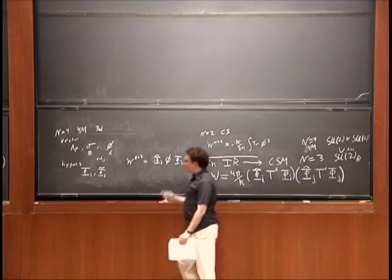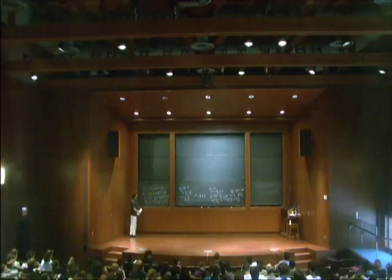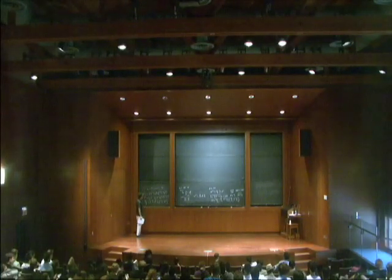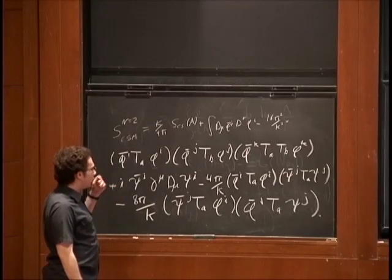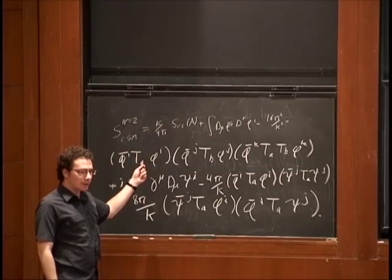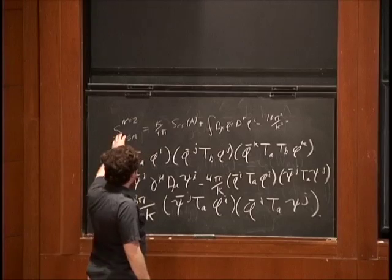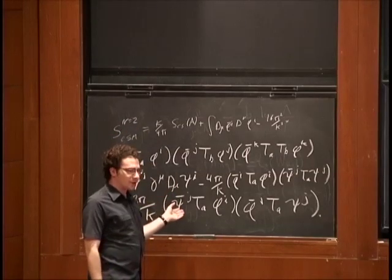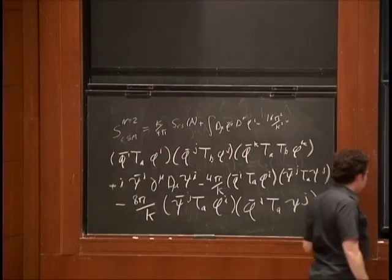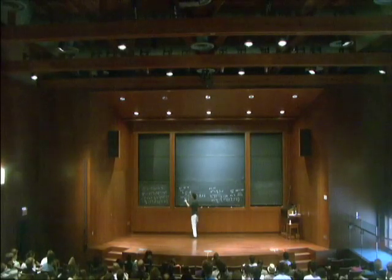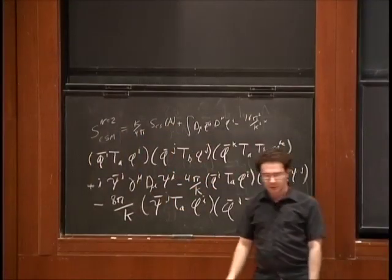We discussed in the N=2 case how the theory is superconformal — no terms can be generated in the superpotential, and while some terms can be generated in the Kähler potential, they're all irrelevant operators except for a multiple of the canonical one, which can be reabsorbed as a wave function renormalization. In these N=2 Chern-Simons theories, the chiral multiplets will get anomalous dimensions in the infrared, which you can compute in perturbation theory in 1/k. If k is very large, the effective coupling is 1/k and the theory is very weakly coupled.